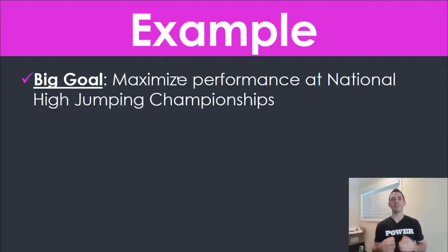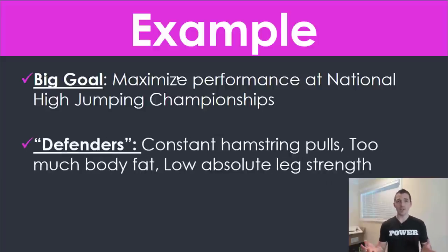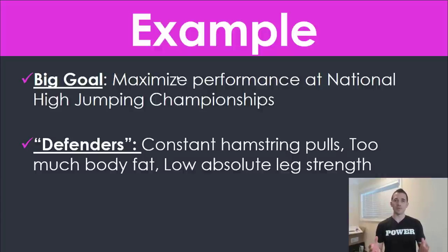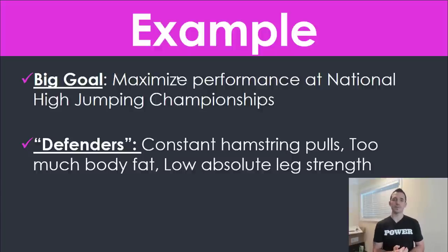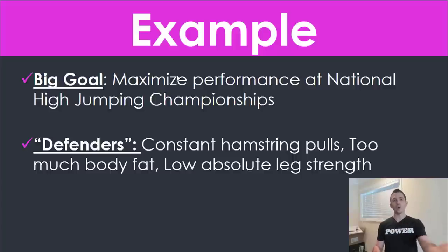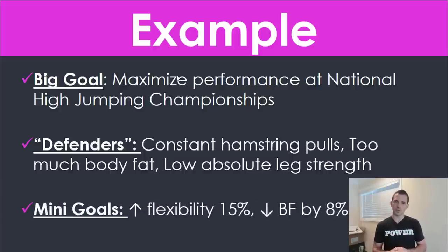Say the big goal is to maximize performance at a national high jumping championship. Through testing and analytics, you've decided there are three things actually stopping your athlete from jumping higher. Maybe they pull their hamstring constantly, so they can't do enough training to actually improve. Maybe they have too much body fat — extra weight makes it harder to go up. Or maybe they have low absolute strength; just because you increase your squat by ten pounds doesn't necessarily mean you jump higher, but poor leg strength could be a factor.